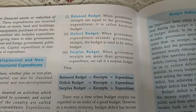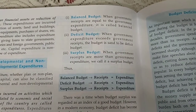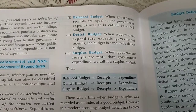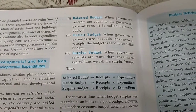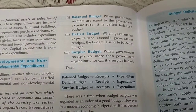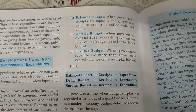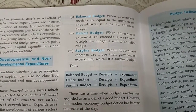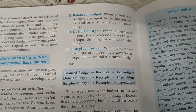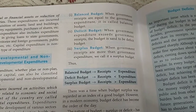On the other hand, a deficit budget happens when the expenditure of the government is more and the receipt of the government is less. When government expenditure exceeds government receipts, the budget is said to be a deficit budget.